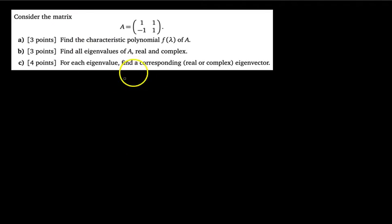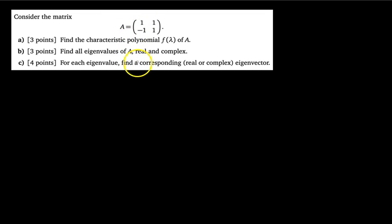Alright, in this video we're going to go through this problem from midterm 3 last fall. When we find the roots of the characteristic polynomial of this matrix A — in other words, when we find the eigenvalues of A — it's going to have i's in them, i meaning the square root of negative 1. So we're going to have complex eigenvalues and therefore complex eigenvectors. A lot of students freak out about complex eigen stuff, but really it's just the same exact process. The algebra is a little more tricky because you have to work with i's.